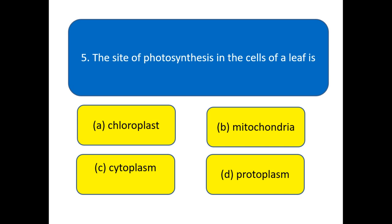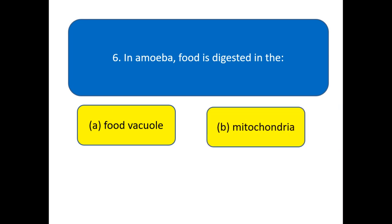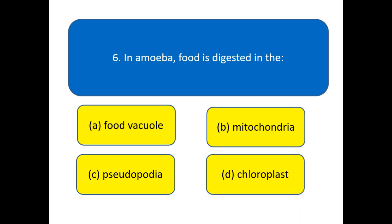In amoeba, food is digested in the? Options: food vacuole, mitochondria, lysosome, chloroplast. Choose the right option for this question. Here we go for the next question.